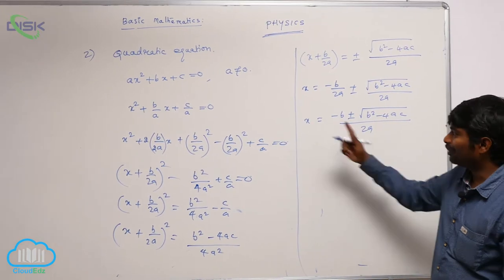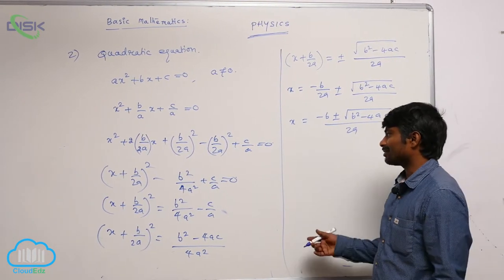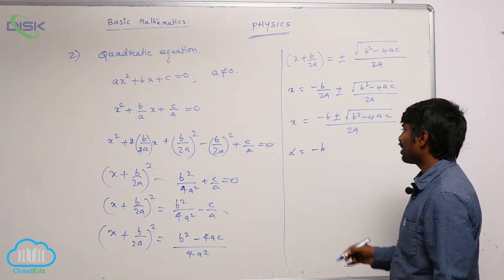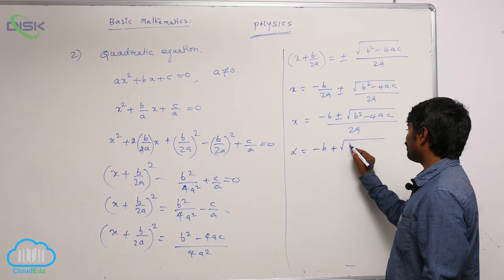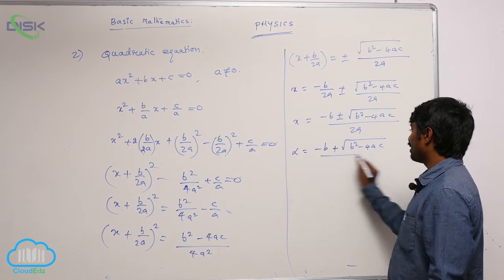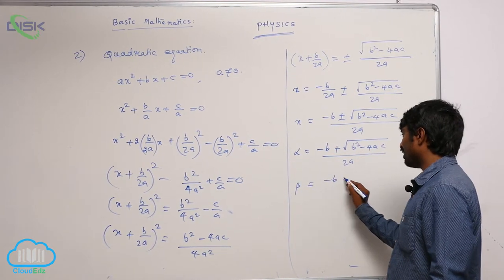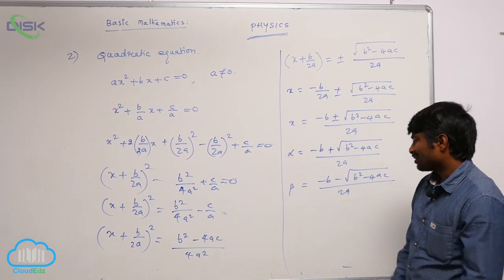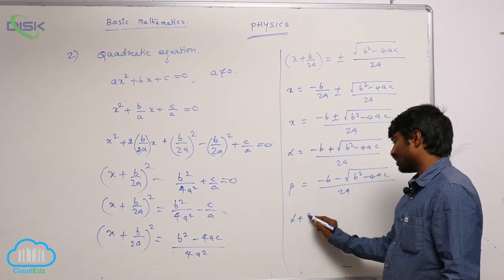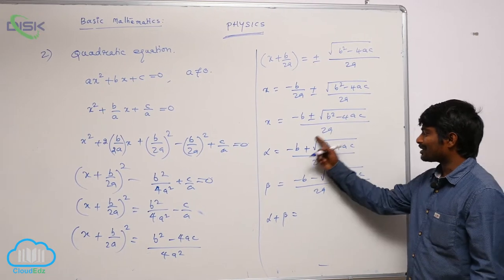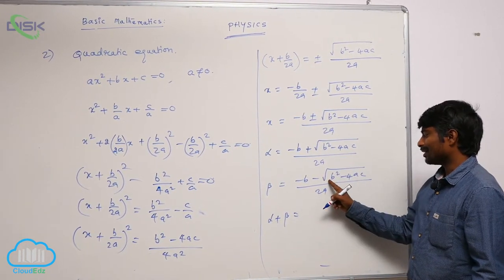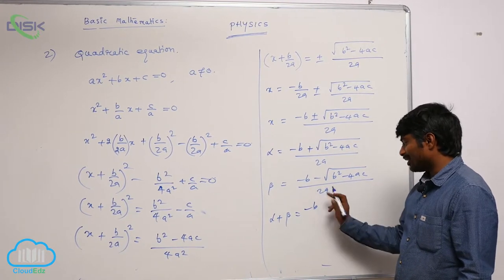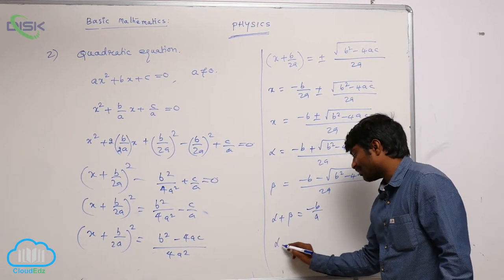Taking the plus sign gives one solution, and taking the minus sign gives another solution — meaning two roots. Let us call those two roots alpha and beta. So alpha equals minus B plus under root of B squared minus 4AC, all over 2A. The sum of these two roots, alpha plus beta: the under-root terms cancel, giving minus B by 2A plus minus B by 2A, so alpha plus beta equals minus B by A.